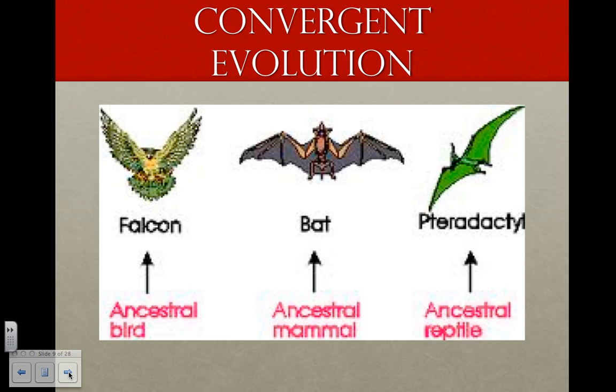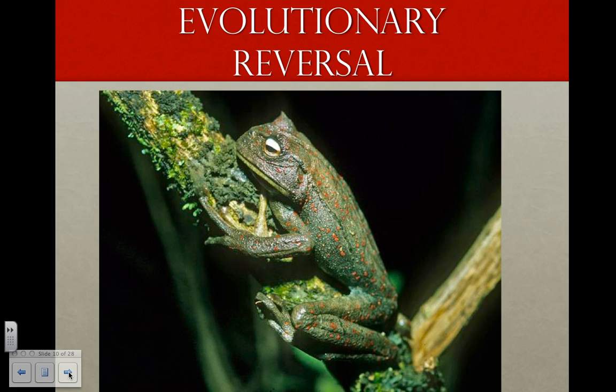Not all similar traits are evidence of relatedness. However, convergent evolution is when independently evolved traits subject to similar selection pressures become superficially similar. For example, the wings that develop in the dinosaur pterodactyl, the bat, and falcon come from different ancestors. Also, a character may revert from a derived state back to an ancestral state. This is called evolutionary reversal.